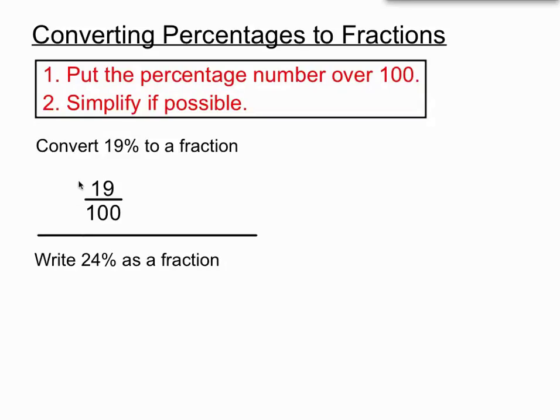Next example: write 24% as a fraction. Step 1, we take the percentage number, in this case 24, and put that over 100. So 24 over 100. To simplify, we're looking to find the biggest number that will divide into both 24 and 100. That number is 4.